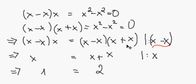And obviously we divide by 0 here again. So we divide by x minus x, which is 0, and then we get x equals 2x, and in the final result, after dividing by x, we get 1 equals 2, which is not true.